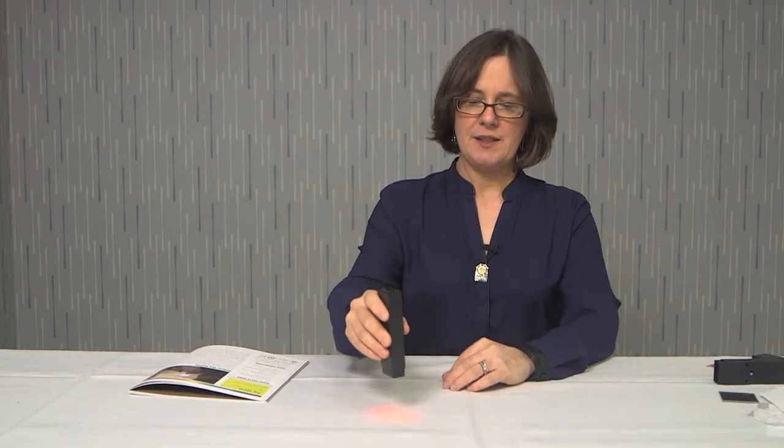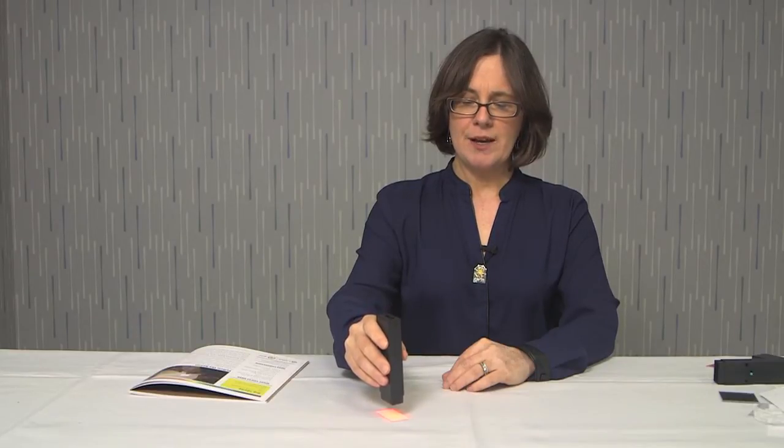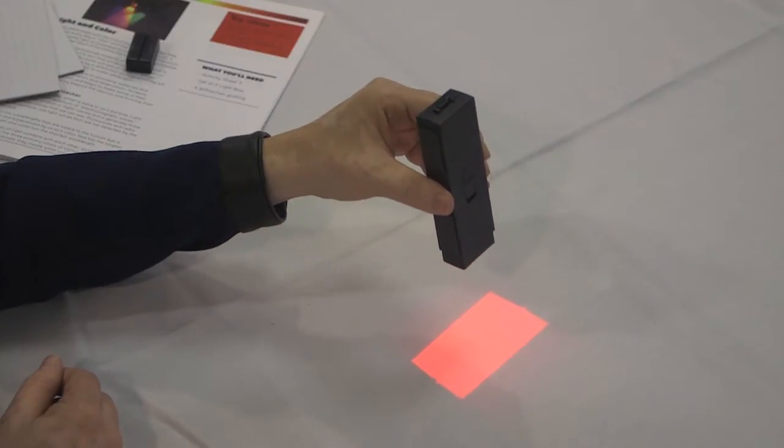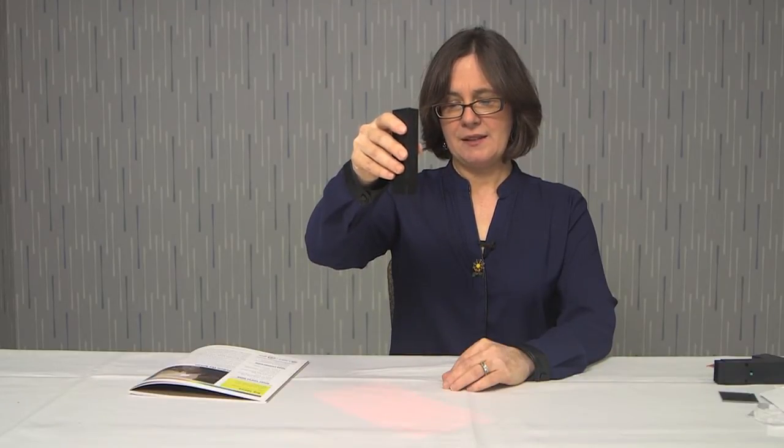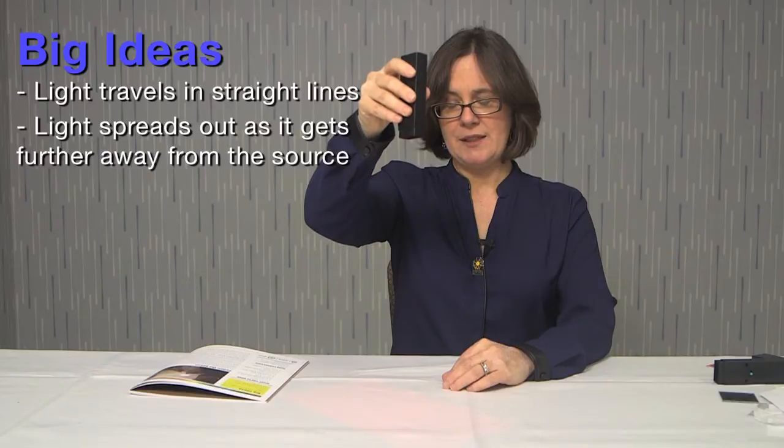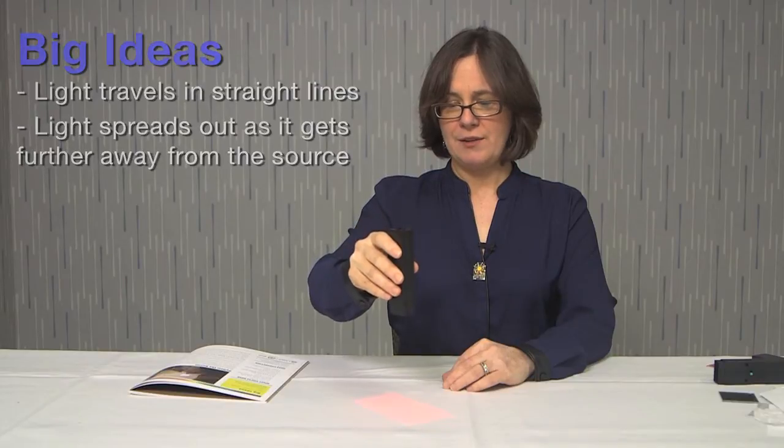You're going to turn on your Light Blocks and hold it very close to either the table or a wall. You'll see that the light becomes smaller and also brighter as it gets closer to the surface. As you lift the Light Blocks up or away from your wall, you can see that that patch of light gets bigger and it also gets dimmer. As the light has to travel further, it is spreading out. The same amount of light has to cover a larger and larger area, so it's getting dimmer. That's just to get a feel for the fact that light travels and that as it travels it generally tends to spread out.